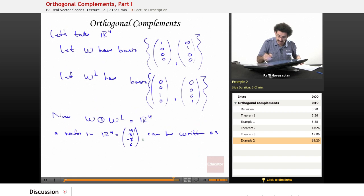We can write it as (4, 3, 0, 0). This vector right here is in the space W, and we can add it to the vector (0, 0, -2, 6), which is a vector in W perp.